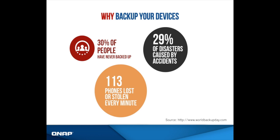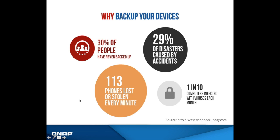That's why QNAP comes in. Having a QNAP at home or work resolves this problem. We can easily backup all files from devices such as personal laptops, work computers, smartphones, tablets, and more. Having a QNAP lets you remote access your files wherever you are and backup all types of devices running different platforms — all in one place. This is what we call centralizing your files. Other than the fact that 30% of people have never backed up, 29% of disasters are caused by accidents, and phones are getting lost every minute.